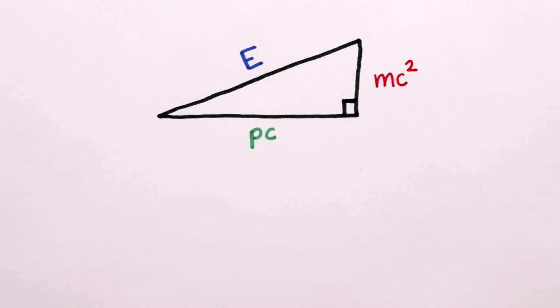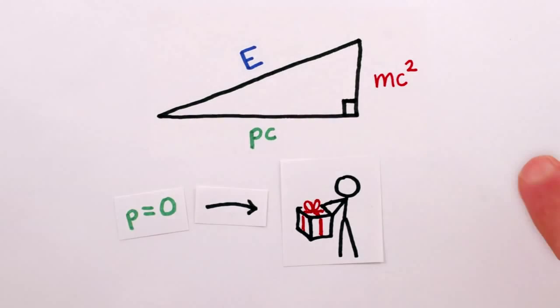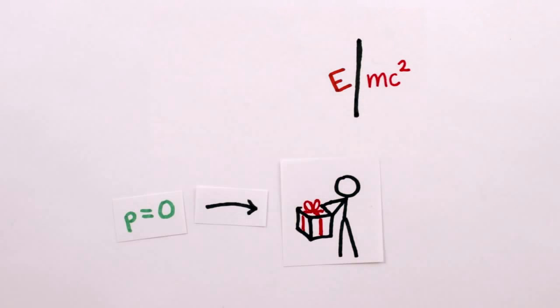Also, from here it's clear to see that for an object that isn't moving and thus doesn't have any momentum and thus p is zero, we get back our good old friend E equals mc squared.